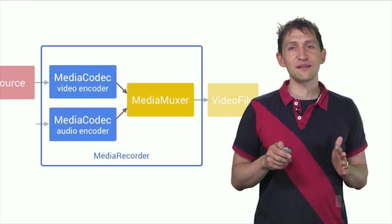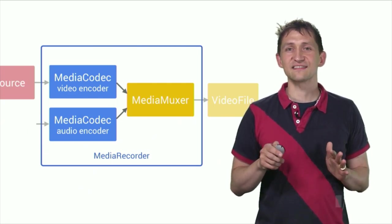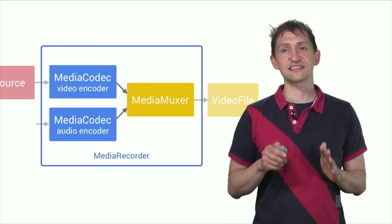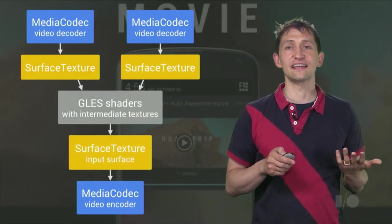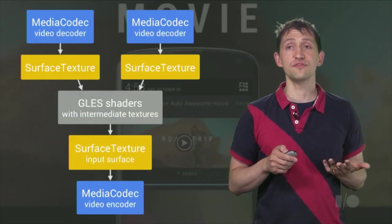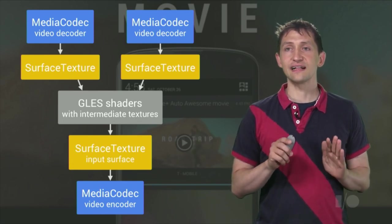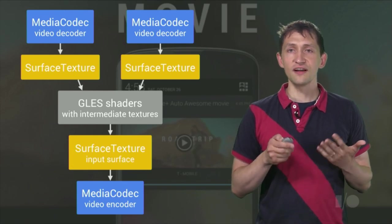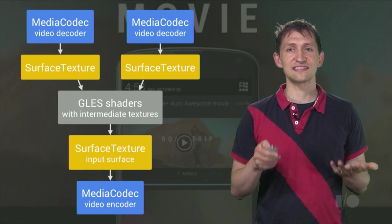In fact, you can build a wide variety of multimedia applications, and might I add quite cool ones when you combine these media blocks with others such as textures and texture shaders. For example, this is how you could do video editing as it is done in Auto Awesome Movie in Google+. Decode the two source videos onto GL textures. Composite them using GL ES shaders onto the input surface of a video encoder. Voila! That was easy.